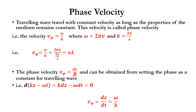The phase velocity dz/dt can be obtained by setting the phase as a constant. For the traveling wave, the phase is kz − ωt. Setting this constant and taking the differential gives 0 = k·dz − ω·dt. When k and ω are constants, this yields dz/dt = ω/k, which is the phase velocity.